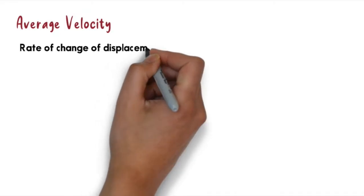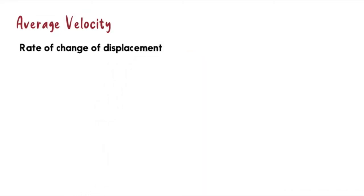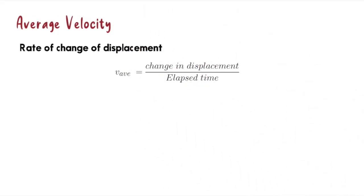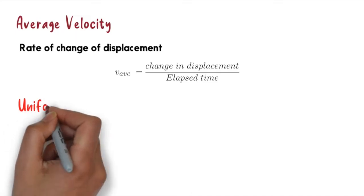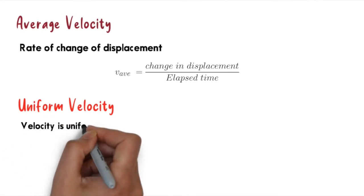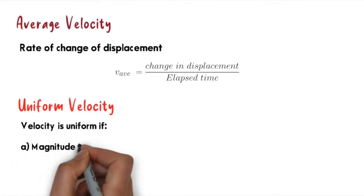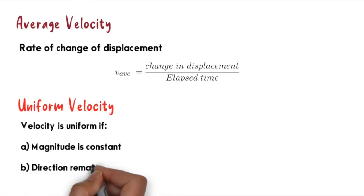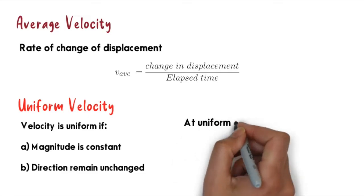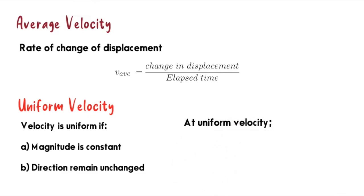Next we talk about average velocity. Average velocity is defined as the rate of change of displacement. The equation we use to express average velocity is change in displacement divided by elapsed time. The last part is uniform velocity — velocity is uniform when the magnitude is constant and the direction of the velocity remains unchanged. Uniform velocity is also called constant velocity. At constant velocity, our average velocity and instantaneous velocity will have the same value; they are constant.